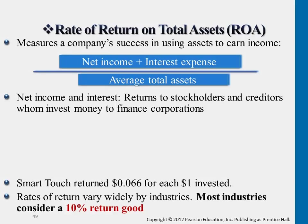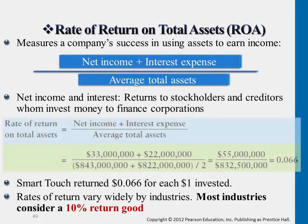Earlier we talked about inventory turnover rates and accounts receivables ratios. This section is more of an overview of the company's return on income relative to how they use their assets, or the return on income relative to the capital that shareholders contributed to the business.